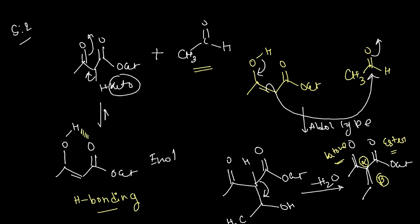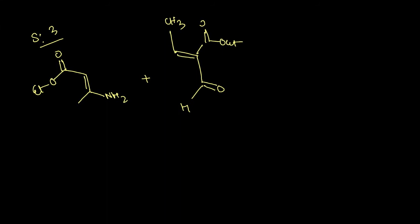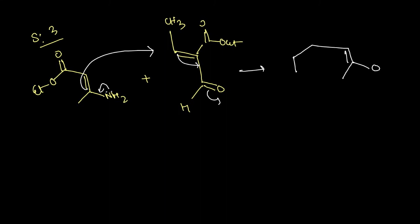In Step 3, the enamine is written with the nitrogen at the bottom of the future pyridine ring, with a CO2Et group. This enamine reacts with the alpha,beta-unsaturated ketone or ester via Michael addition. Through Michael addition, rearrangement occurs: the NH2 attacks and we get a compound with a double bond, CH3, OH, CO2Et, and another CO2Et group.